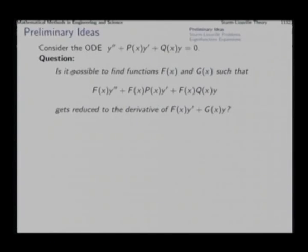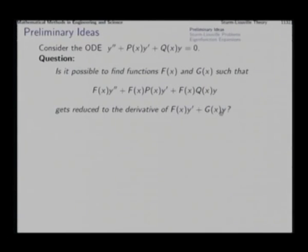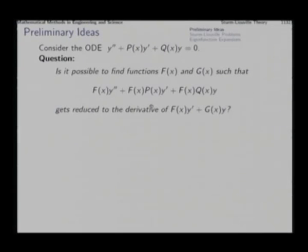Can we find a function f and an associated function g such that f times (y double prime plus p y prime plus q y) turns out to be the exact derivative of a first order differential expression involving y prime and y? We know that the coefficient of y prime in that must be f, because its derivative must produce f y double prime. But what about the rest of the terms — will they match correctly?